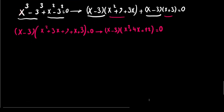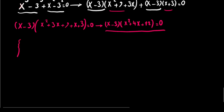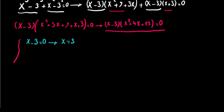Since the product of two factors equals zero, we have two situations. The first is x minus 3 equals 0, giving x equals 3, which is a real number. The second is x squared plus 4x plus 12 equals 0.